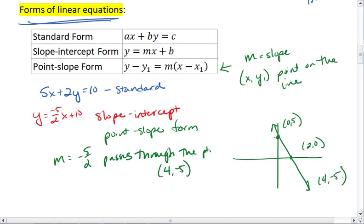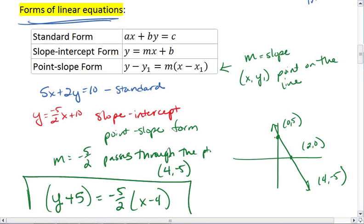...what you can use is point-slope form and plug these in to find that y minus negative 5, which is y plus 5, equals negative 5 halves times (x minus 4). And that would be the equation in point-slope form. The benefit of this form is we can plug in a slope and a point.